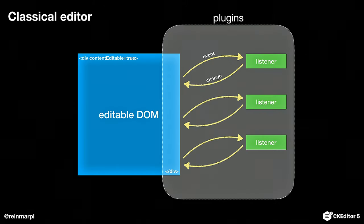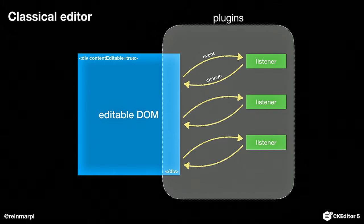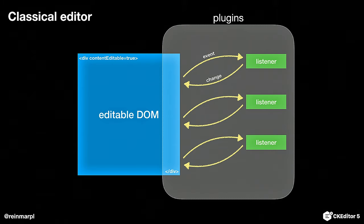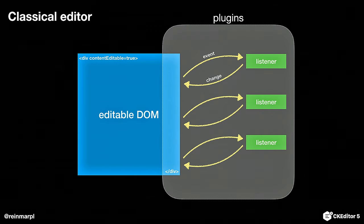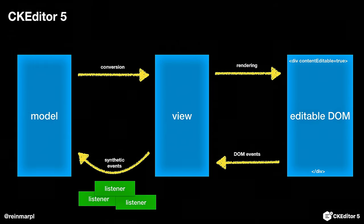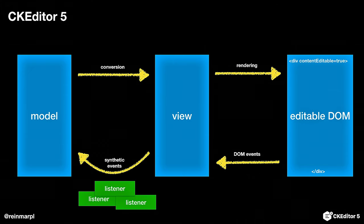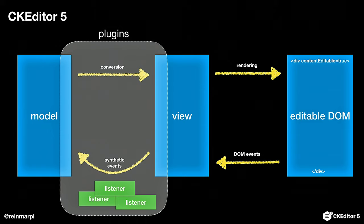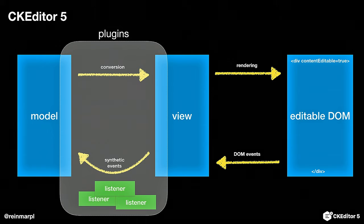This is the data flow: the user interacts with the DOM, we change the model, the model gets converted to the view, and the view gets rendered to the DOM. If you'd try to implement features for the classical approach, your plugins have to work with the DOM. But in CKEditor 5 with its model, view, and editable DOM, your plugins reside between the model and the view — they don't have to care about the DOM. They work with structures designed to be easier to work with when considering rich text.